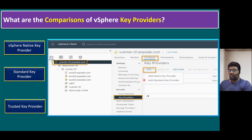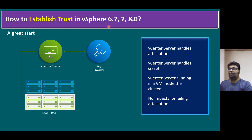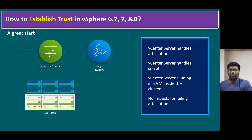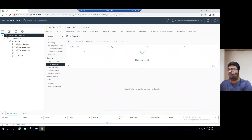Now let's quickly jump into the concept. How to establish trust within vSphere 6.7, 7, and 8.0. The key idea of a key provider is that we can create either a vSphere Native Key Provider or a Standard Key Provider to encrypt our vCenter server, ESXi hosts, and all associated virtual machines. This encryption enhances security in our virtual machine guest OS and reduces risk. Let's quickly log into our lab system. We notice key providers under vCenter > Configure > Key Providers > Add Key Providers — two options: Native Key Provider and Standard Key Provider.